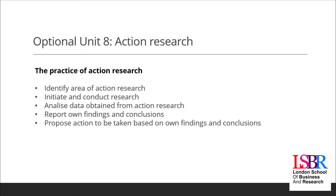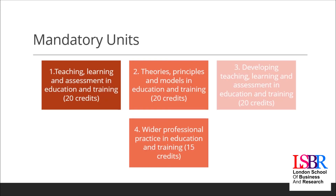When it comes to the optional units, there are eight units on screen — they constitute 45 credits and you can mix and match, picking the ones most relevant to your chosen professional path or areas of interest. The optional units include: Develop and Prepare Resources for Learning and Development; Develop Learning and Development Programs; Equality and Diversity; Evaluating Learning Programs; Identify the Learning Needs of Organizations; Manage Learning and Development in Groups; Understanding and Managing Behaviours in a Learning Environment; and Action Research.